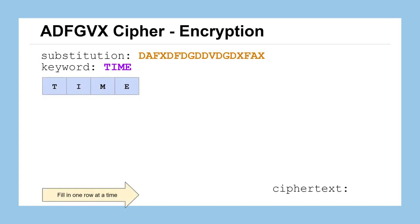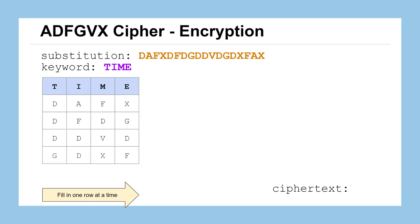We're going to create a new table with labels across the top — one label for each character in your keyword, so four columns labeled T, I, M, E. We fill in each row, one at a time, using the characters from our substitution text: D-A-F-X for the first four characters go in the first row, and so on. We'll have a couple of empty spaces at the end, and that's okay — it does not affect anything.